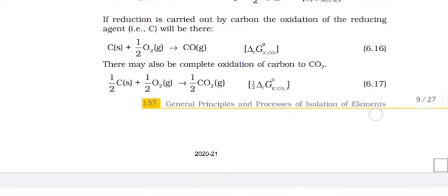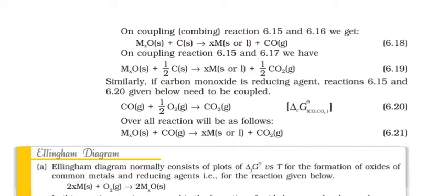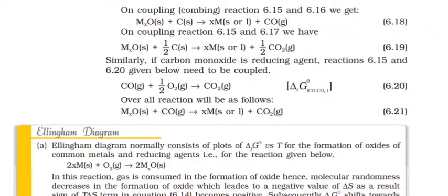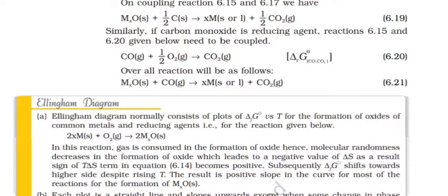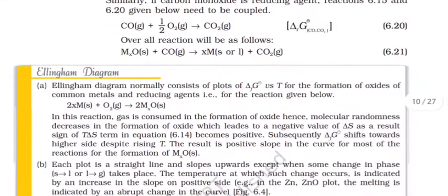There may also be complete oxidation of carbon to CO2. On coupling reaction 6.15 and 6.16 we get MxO plus C gives xM plus CO. On coupling reaction we have MxO plus half C gives xM plus half CO2. Similarly if carbon monoxide is reducing agent reactions are given below need to be coupled. CO plus half O2 gives CO2. Overall reaction will be as follows.